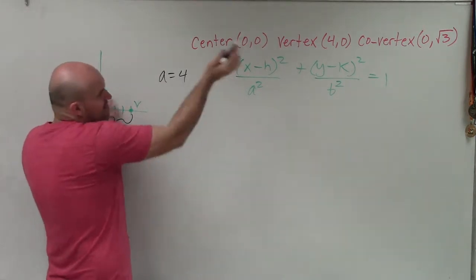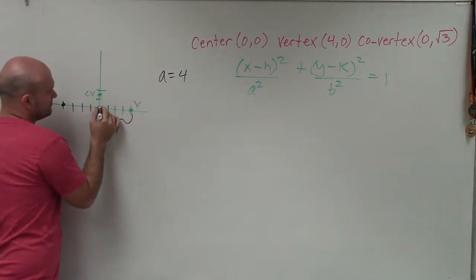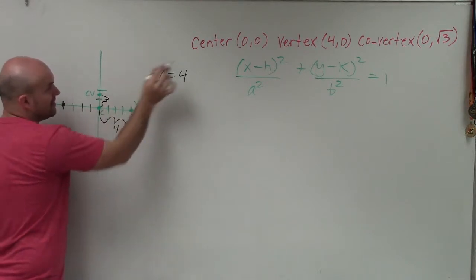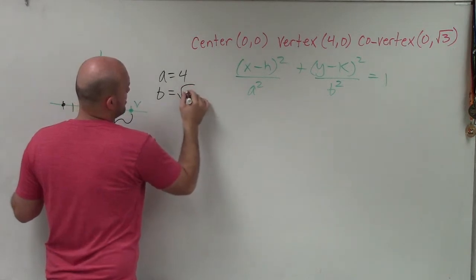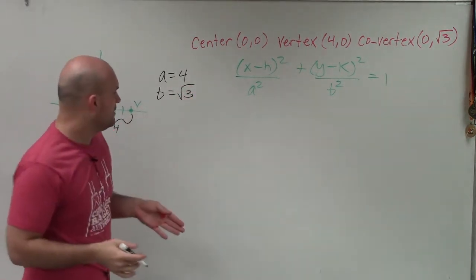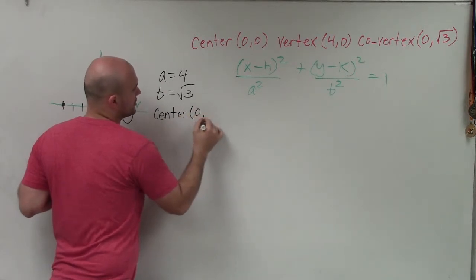Even if you use -4, you still square it, giving a² = 16. My co-vertex was at √3, so b = √3. We also know the center is (0,0).